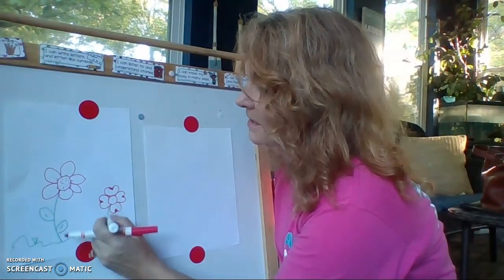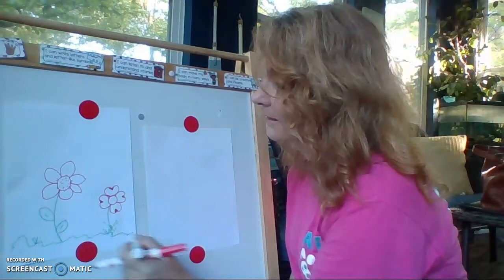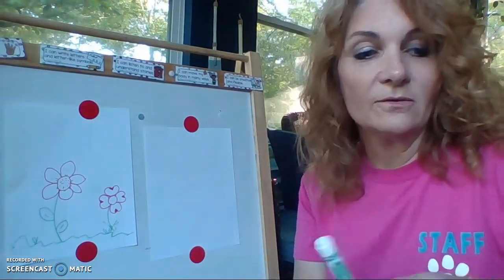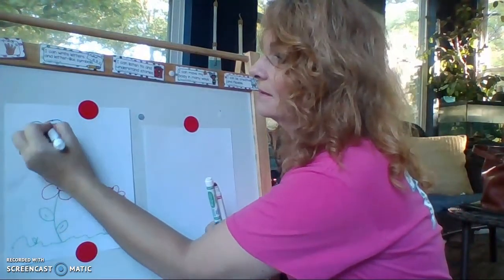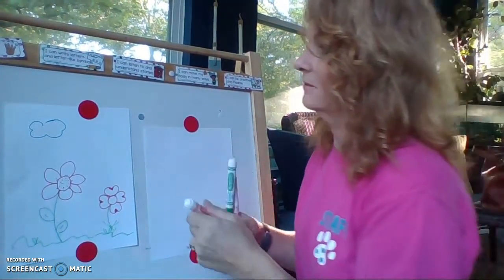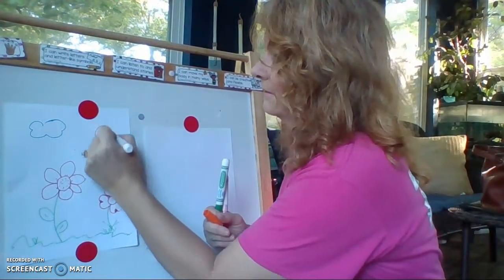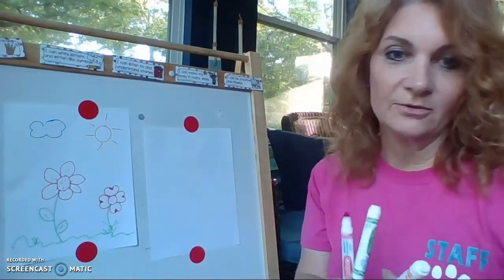And then of course you can add a stem, or you can put it on a tree with some leaves. And of course you can make your picture as detailed as you want. You can add some clouds. You can add a sunshine. However you want to make your picture with your details. Here's my sun and my cloud and my pictures of my flowers.